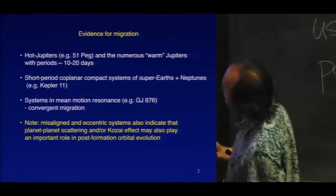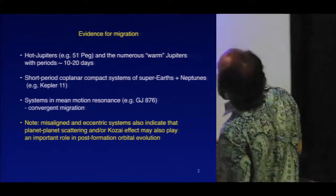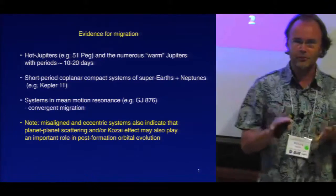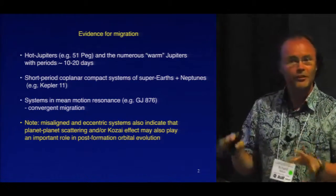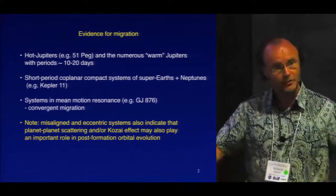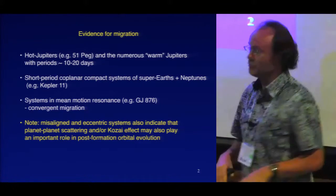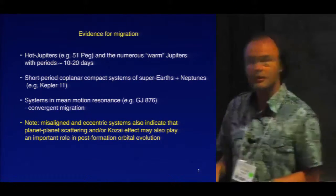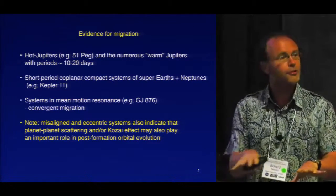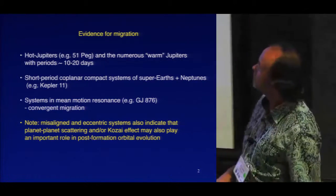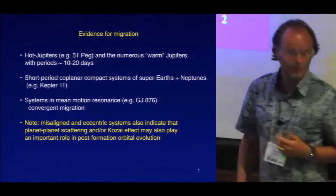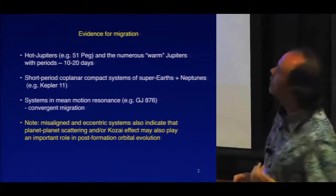We obviously have the short-period coplanar compact systems, such as Kepler-11, found by the Kepler spacecraft — systems of super-Earths and Neptunes. To all intents and purposes, they look like almost the perfect systems you would predict would form by coagulation of solids in a disk, followed by relatively quiet migration in towards the central star. We have systems which are in mean motion resonance, indicating an integer commensurability between their orbital periods. In order for that to arise, you need some form of relatively long-timescale convergent migration to bring orbits together and lock them into that configuration. So there are a number of pieces of evidence within the extrasolar data which indicate that migration is an important part of the planet formation process.